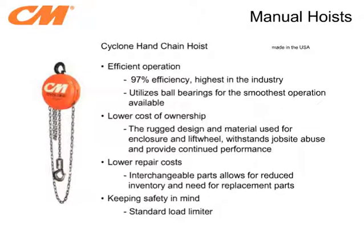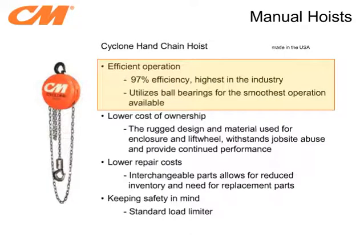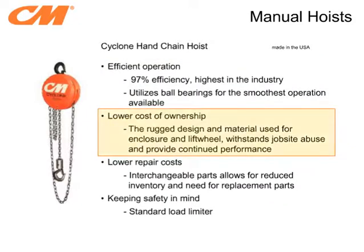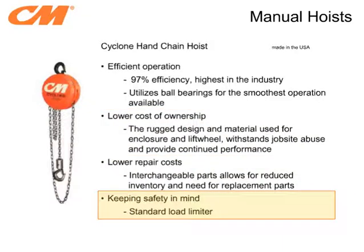Another manual hoist option is the Cyclone Hand Chain Hoist. It is the most efficient hoist on the market, so for the amount of force needed to move the load, you will feed through the least amount of hand chain. This is primarily accomplished through the use of ball bearings, which also provide smooth operation. Since the unit has been designed to be rugged and to have interchangeable parts, your total cost of ownership and repair costs are significantly reduced. In addition, a load limiter comes as a standard option on this hoist.